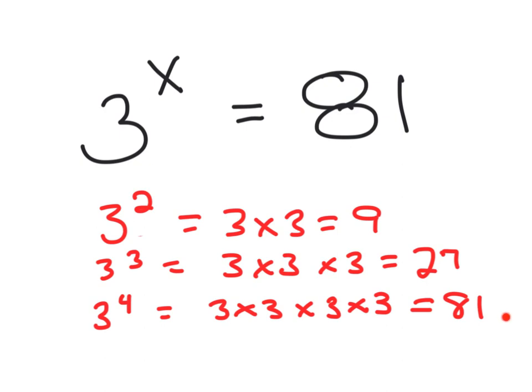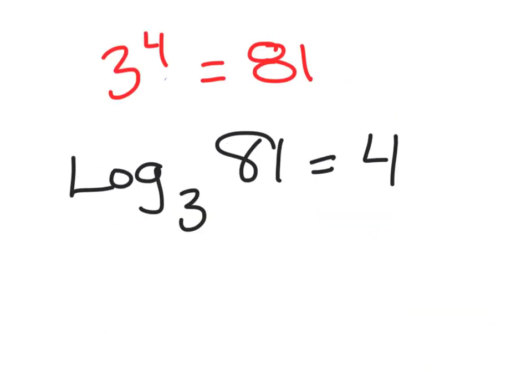So that works. We're all set. Now let's put it together. 3 to the fourth equals 81. Then log base 3 of 81 equals 4.